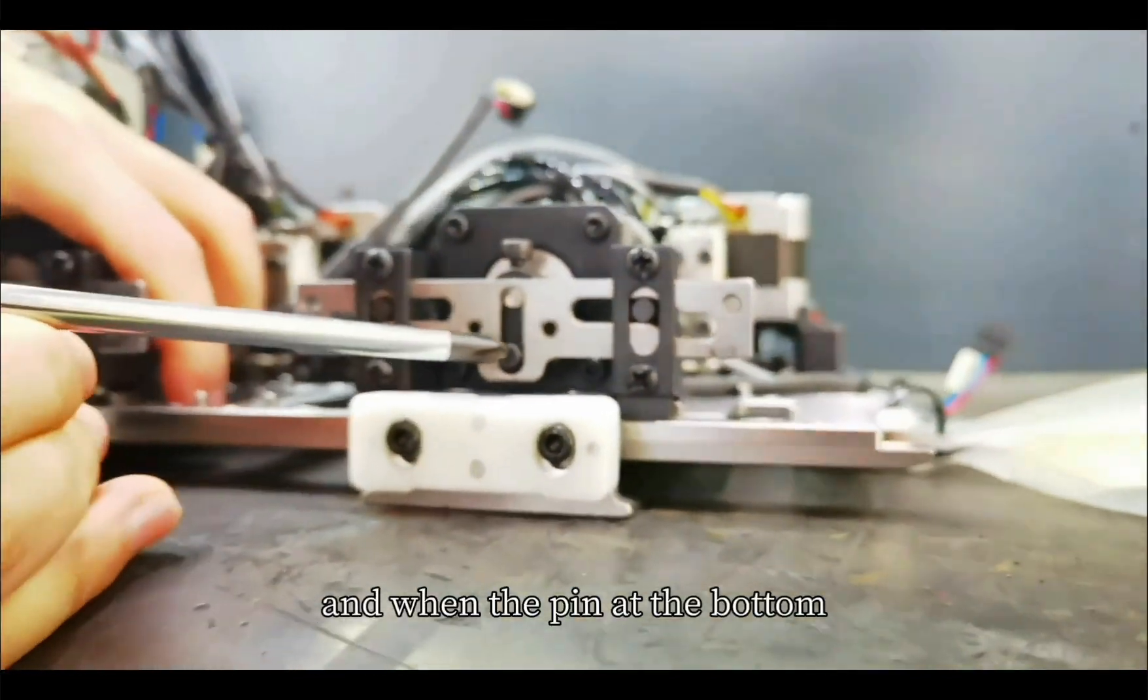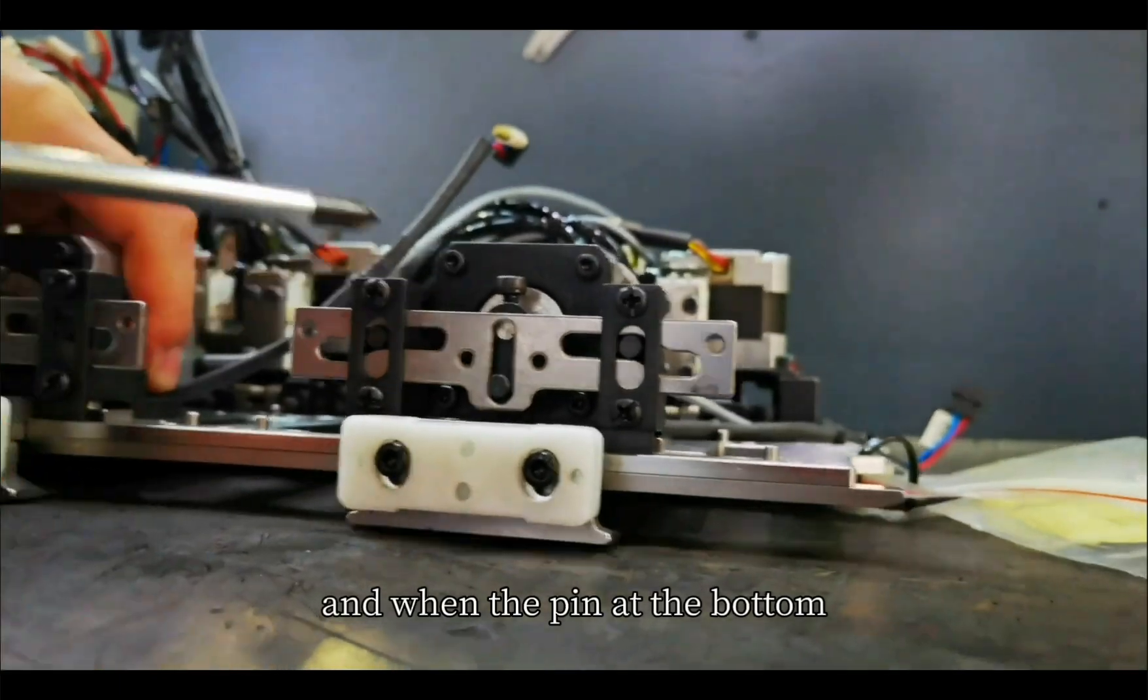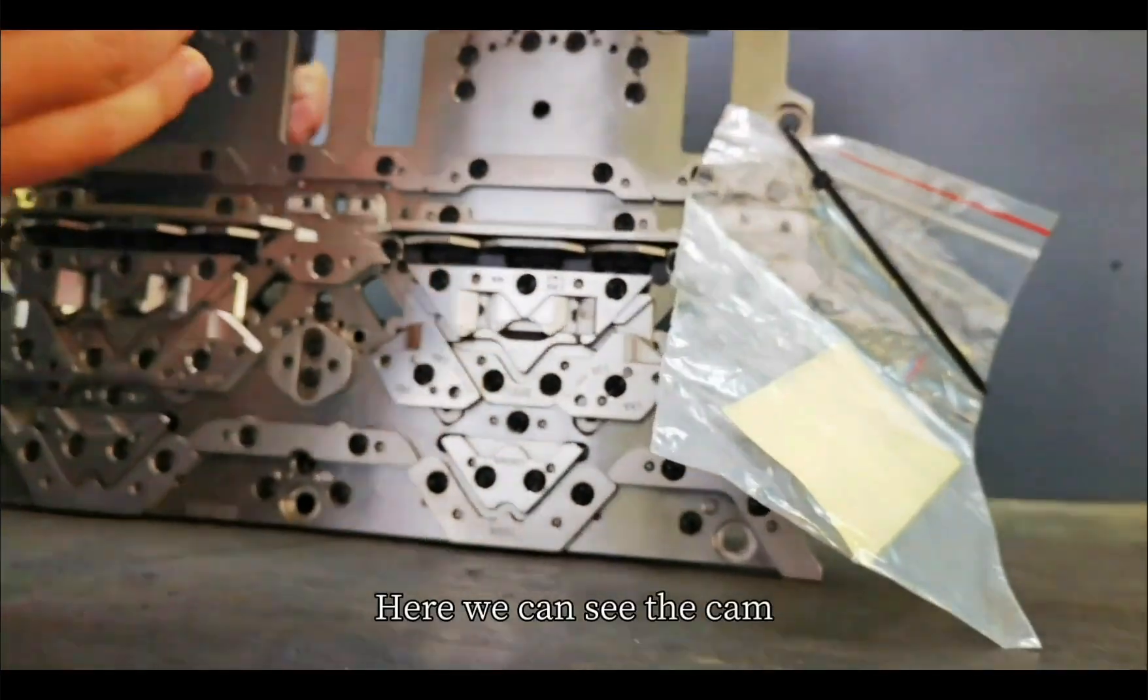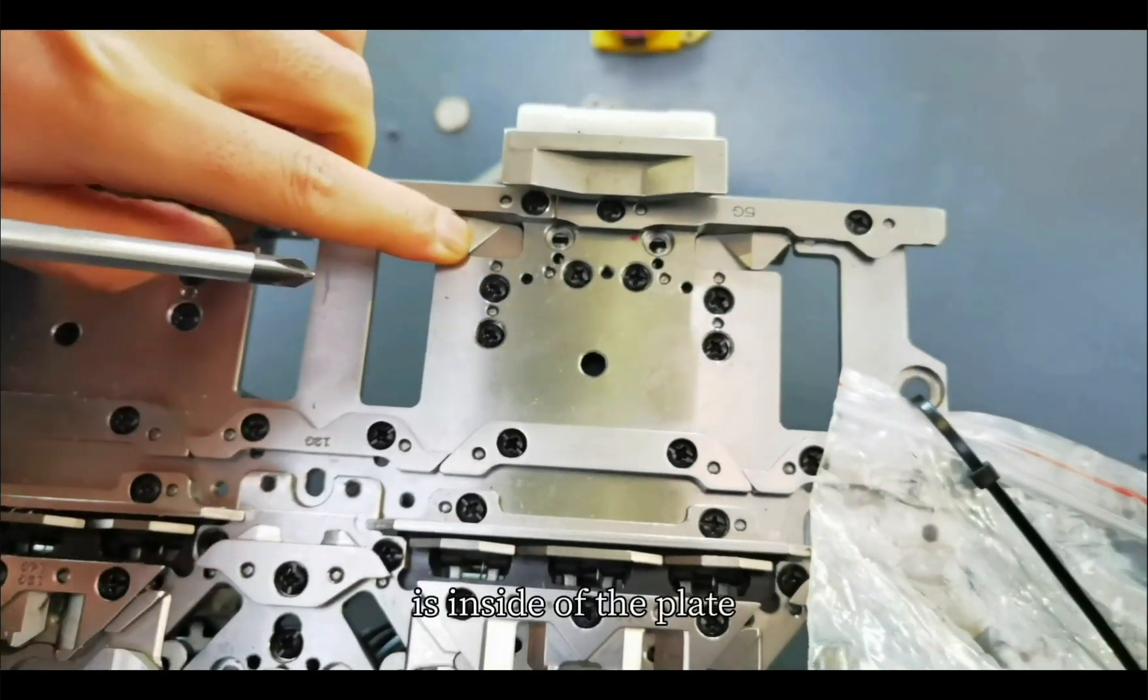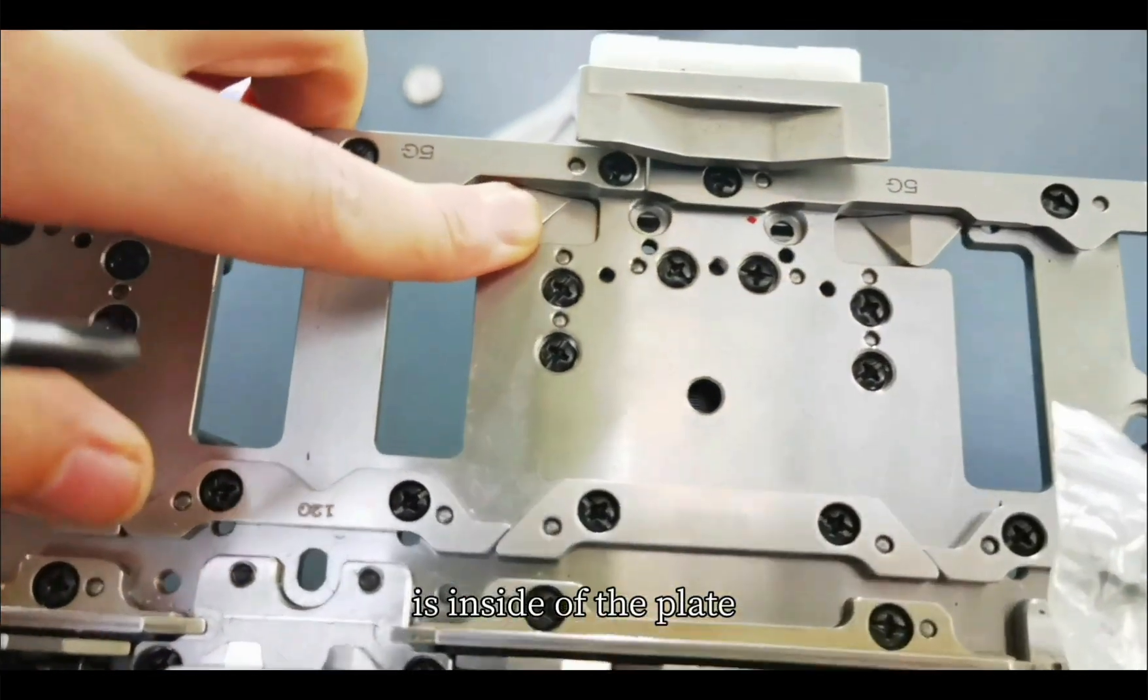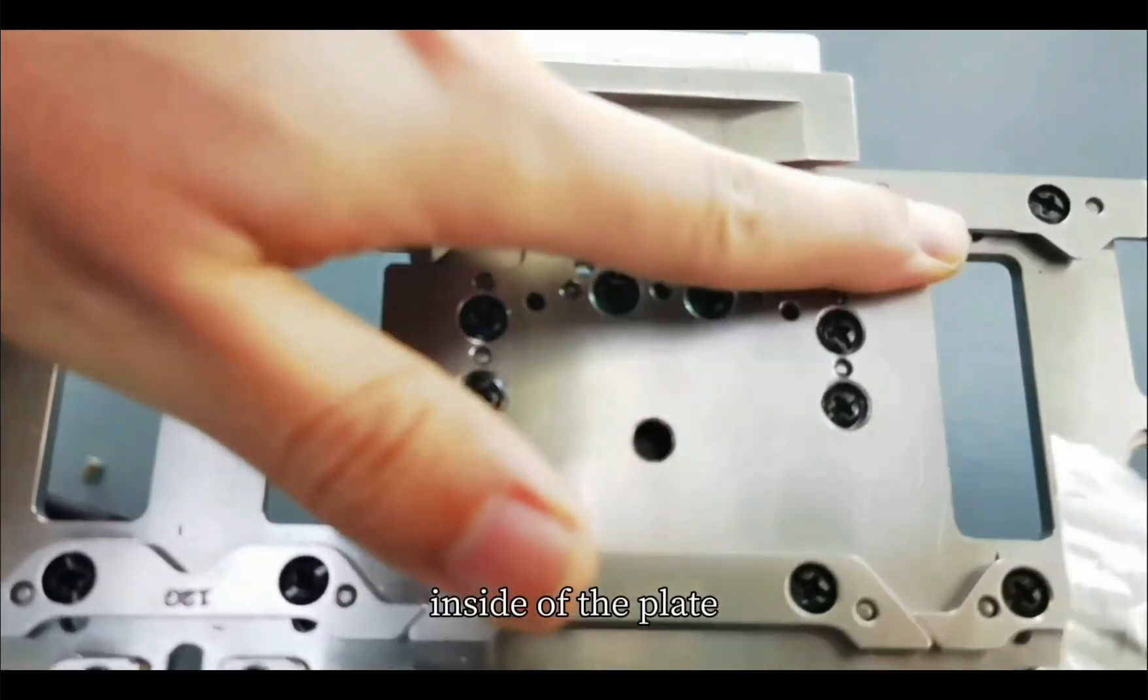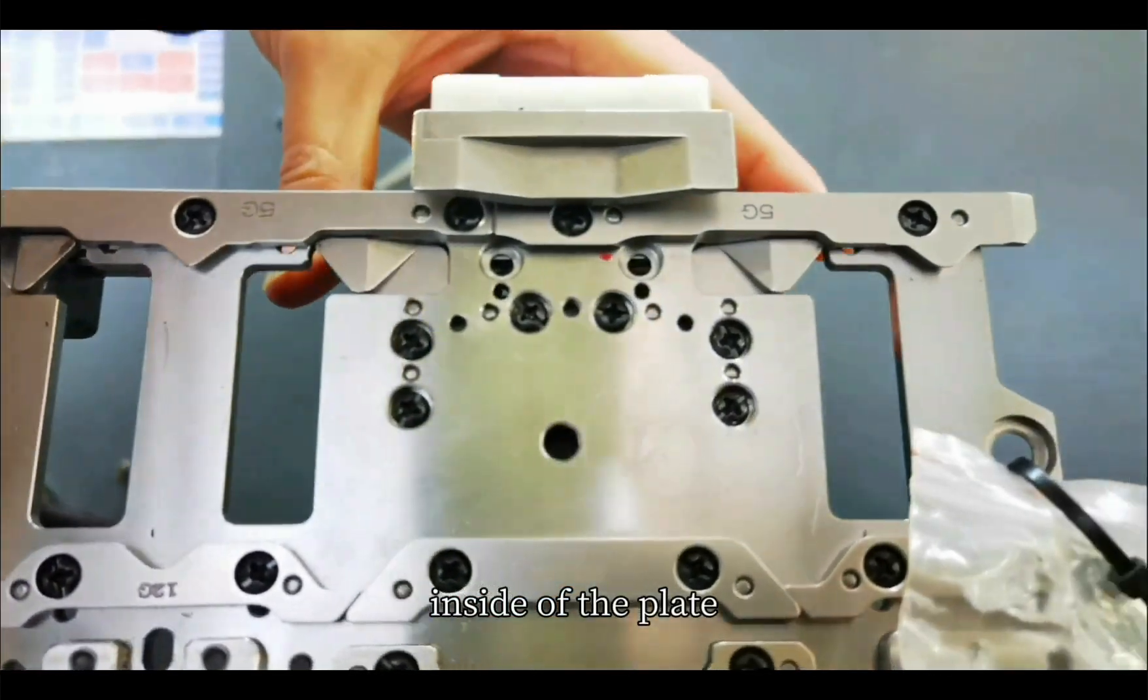Other than the pin at the bottom, we can see the cams. One, two. These two push cams are inside of the plate, the carriage.